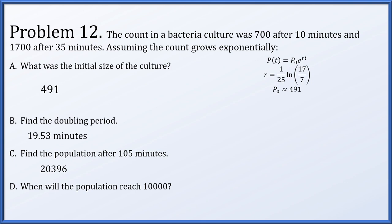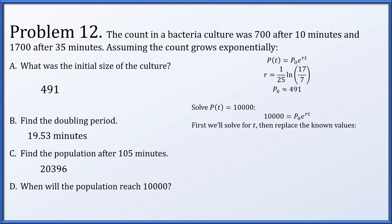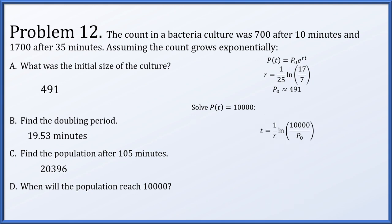Finally, in part d, when will the population reach 10,000? We set p0 times e to the rt equal to 10,000 and solve for t. Dividing both sides by p0, taking a log, and dividing by r, we get t equals (1/r) times the natural log of 10,000 over p0. Plugging in p0 and r, this resolves to 25 times the natural log of 10,000 over 491, divided by the natural log of 17 over 7 — approximately 84.92 minutes.